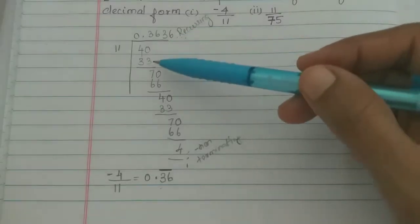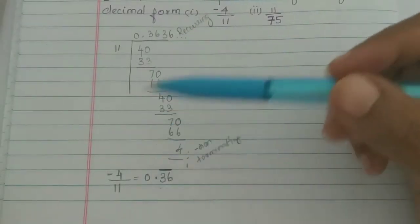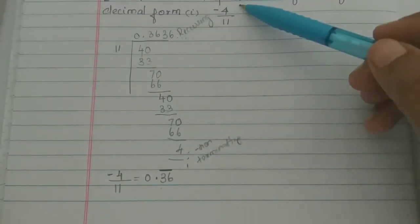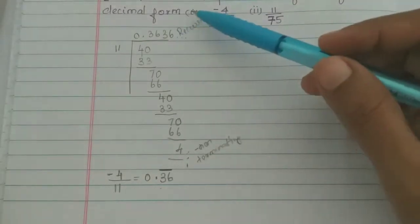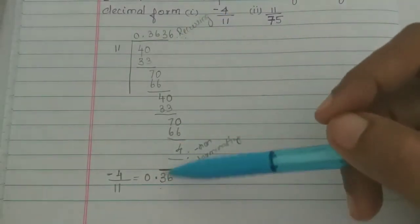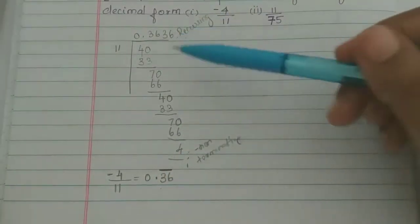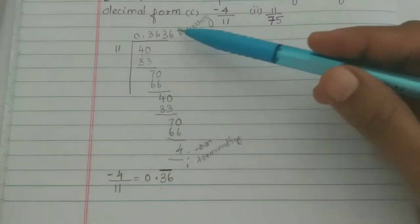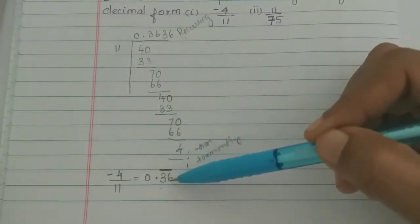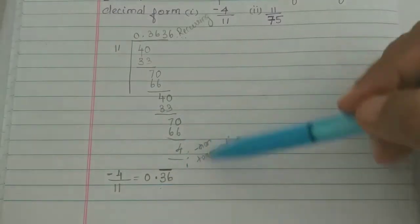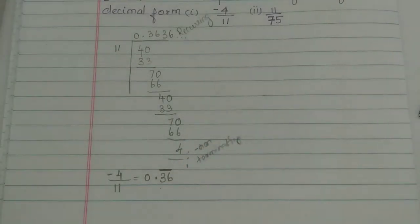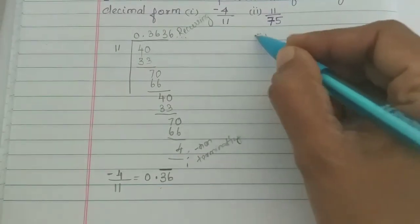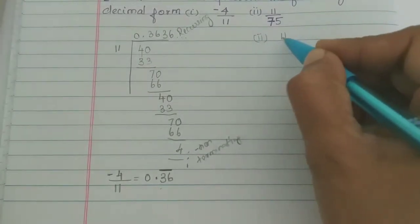Therefore, this is how we represent a rational number as a recurring decimal. The bar over 36 means those digits are repeated. That is what recurring means. Now let us look at the next example: 11 divided by 75.